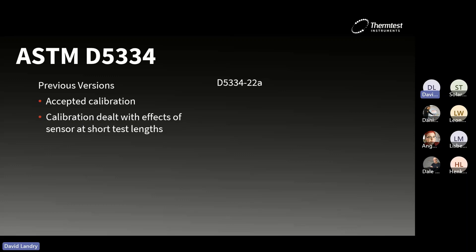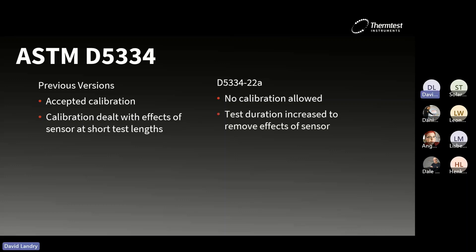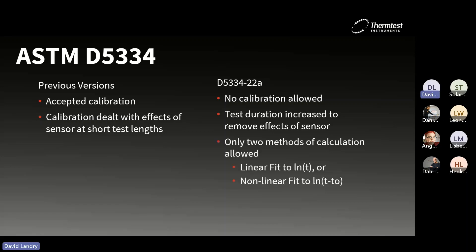The updated version, as of 2022, very explicitly disallows calibration. This means that your test duration has to be massively increased to remove the effects of the sensor. It restricts the calculation method to only two methods: a linear fit of temperature to the logarithm of time, or a nonlinear fit of temperature to the logarithm of an adjusted time — where the time gets adjusted by a so-called time offset, which can be positive or negative. This time offset helps overcome the effects of the sensor.